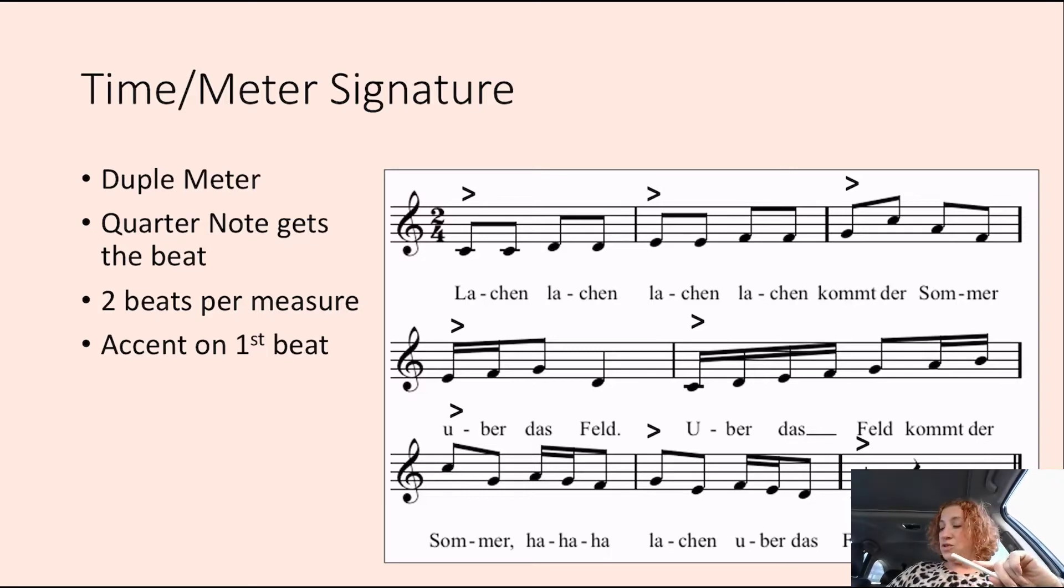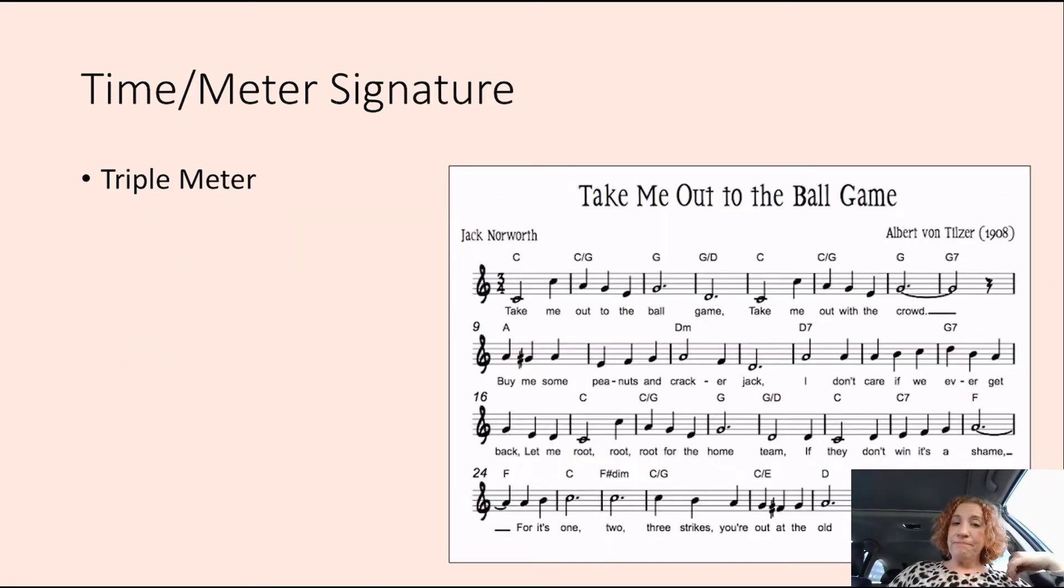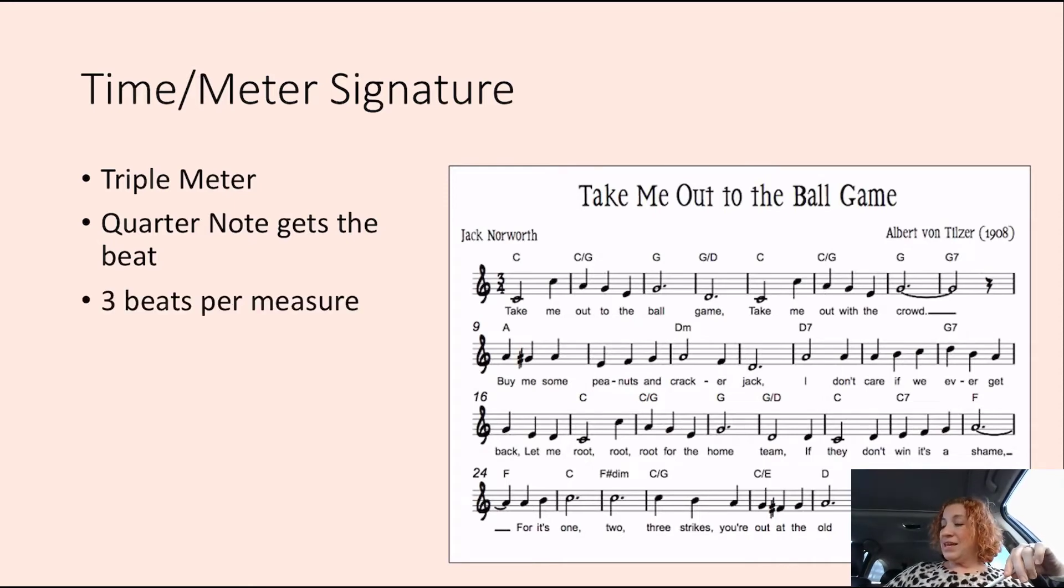Then if we go into triple meter, here we are. We are in 3/4 time. So, that 4 on the bottom tells us that the quarter note gets the beat. There are 3 beats per measure. The accent is again on the first beat. Like, okay 1, 2, 1, 2, that's duple measure. 1, 2, 3, 1, 2, 3, that's a triple meter. I said duple measure, duple meter.